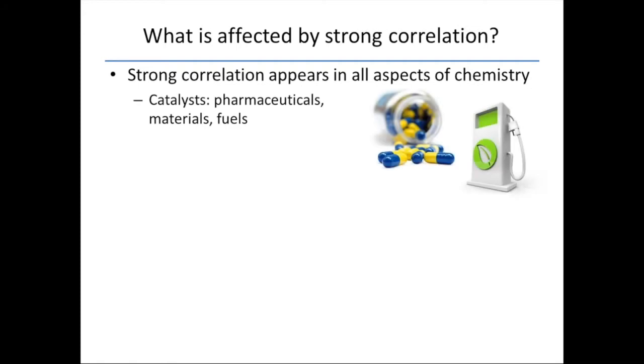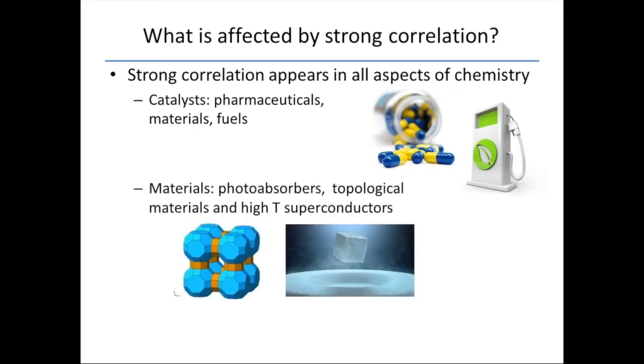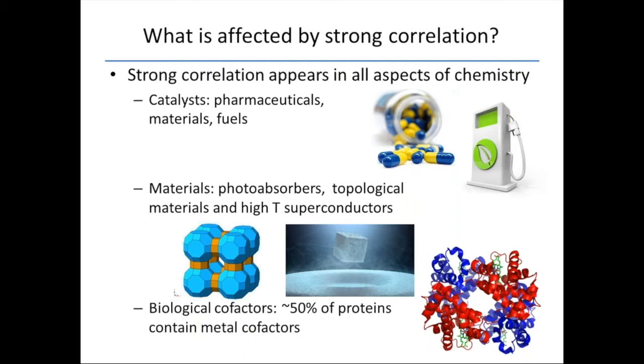So I mentioned bond breaking. If you have catalysts to make pharmaceuticals or materials or fuels, you're going to need to worry about this, especially because a lot of those catalysts are metals. In inorganic chemistry, you have photoabsorbers or high-temperature superconductors. In biological chemistry, about half our proteins contain metal cofactors. A lot of these are small clusters of metals. We're going to talk about a few more of those later in this webinar.